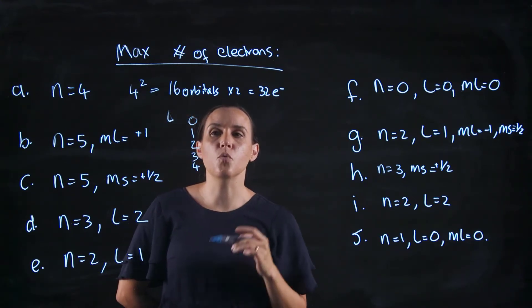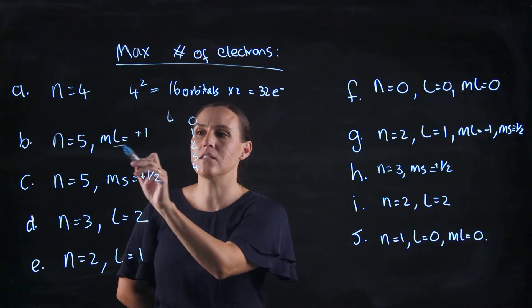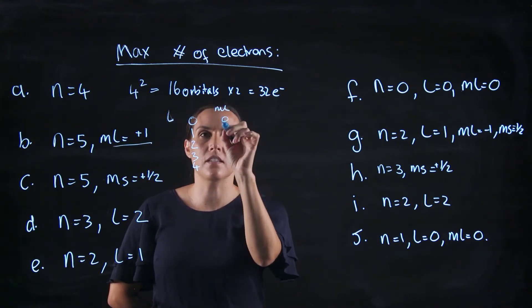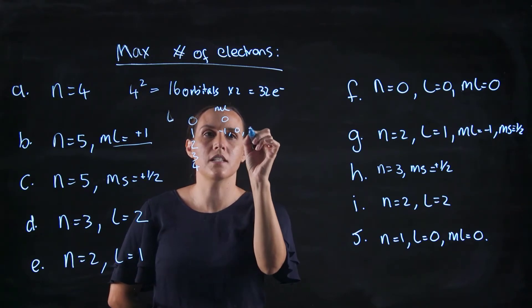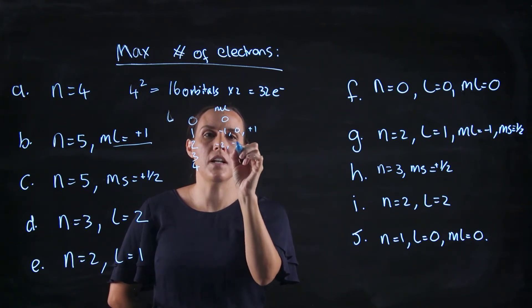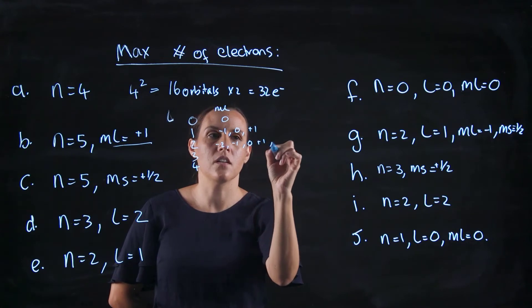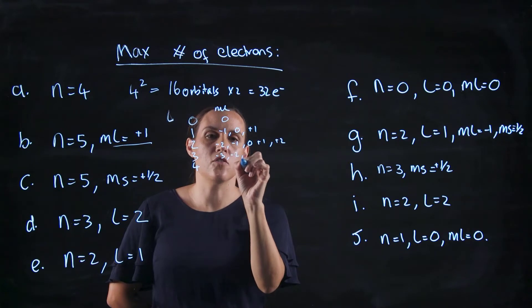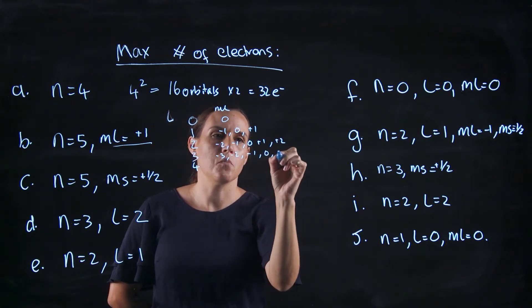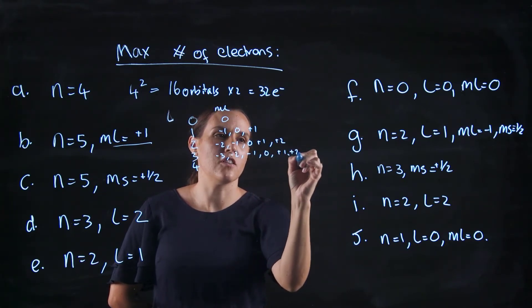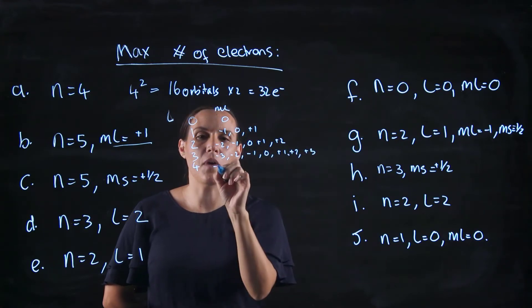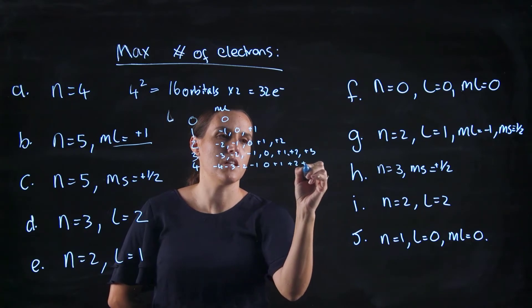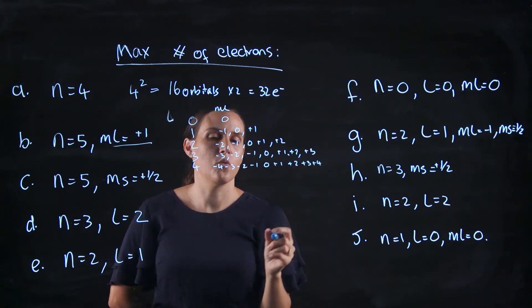So of those l values, which ones would have a plus 1 in their ml? So for 0, the only ml is 0. For this one would be minus 1, 0, plus 1, minus 2, minus 1, 0, plus 1, plus 2. For 3, minus 3, minus 2, minus 1, 0, plus 1, plus 2, plus 3, plus 4, would be your options.